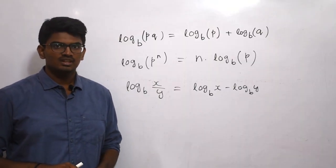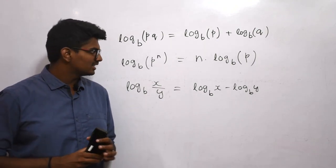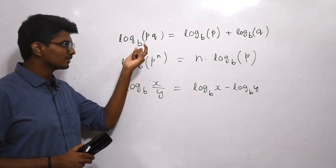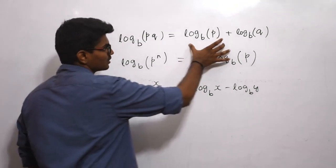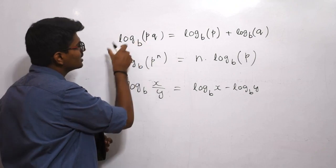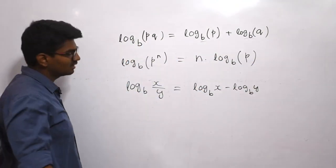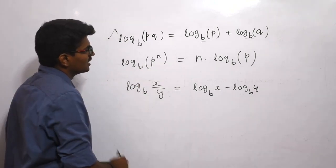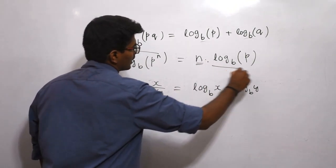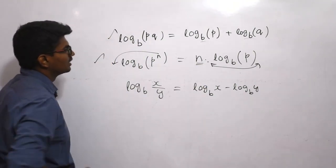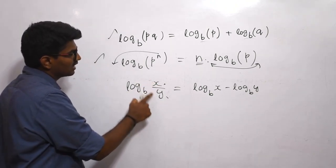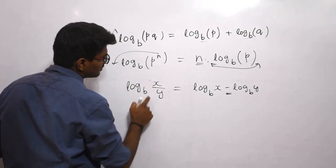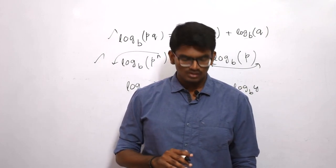We have three important properties of logarithm. First, if there is a product of two numbers and you want to find logarithm with base b, the product can be written as the sum of logarithms: log base b of p times q equals log base b of p plus log base b of q. Second property: if there is a number with power n and you want the logarithm, the power can be brought to the front — it becomes n times log base b of p. Third property: if two numbers are in division, you subtract their logarithms. If it is a product, add; if it is division, subtract. These three properties are very useful in your exam.